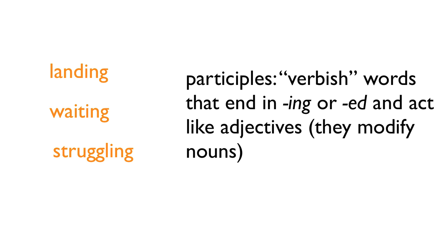Participles are these verb-like words that end in ING or ED, and they act like adjectives when we put them in writing — in other words, they modify nouns. They're sort of like genetic descendants of verbs, but they're not really verbs because they can't stand on their own as verbs. They're modifiers, and they end in ING or ED. Because they have this verbal kind of parentage, they tend to give our writing some kind of action, a sense of motion and things happening. And that's where their real power comes in.